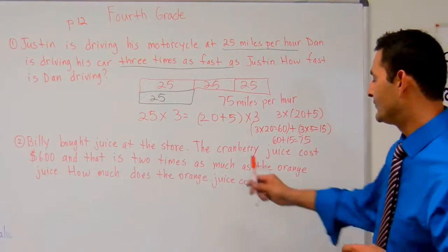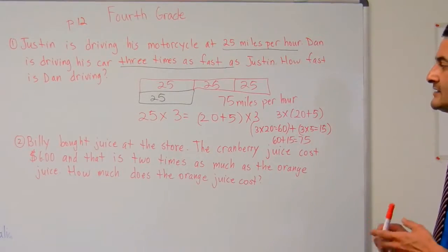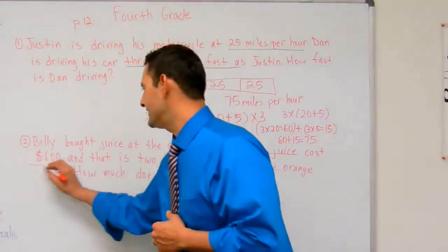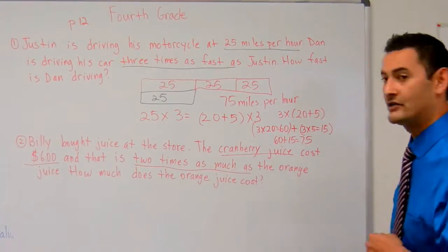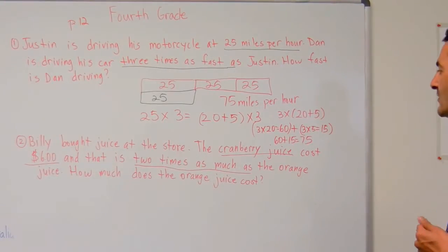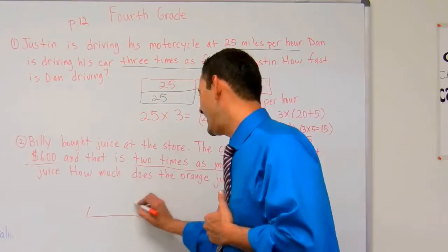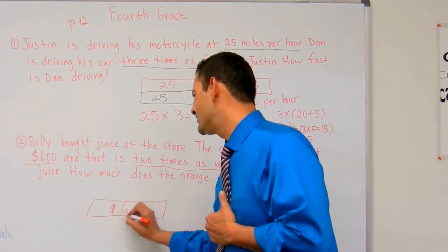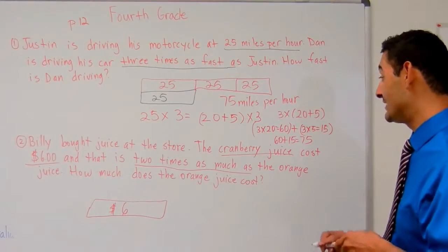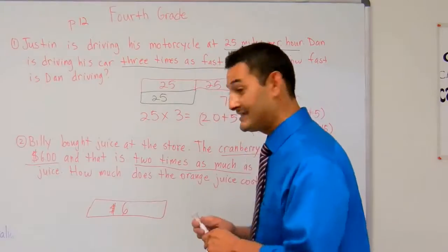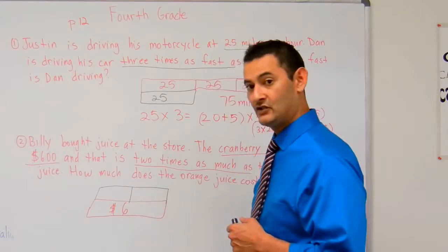Now let's take a look at number 2. Number 2 says: Billy bought juice at the store. The cranberry juice costs $6, and that is 2 times as much as the orange juice. Again, we're comparing — this is multiplicative comparison. Here I've got a bar graph. The cranberry juice costs $6, and the cranberry juice is 2 times as much as the orange juice. So the orange juice is less. I'm going to split that down the middle by 2.